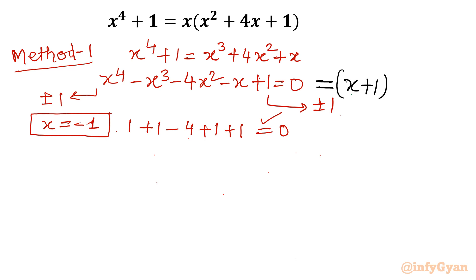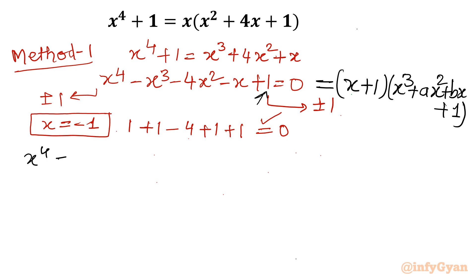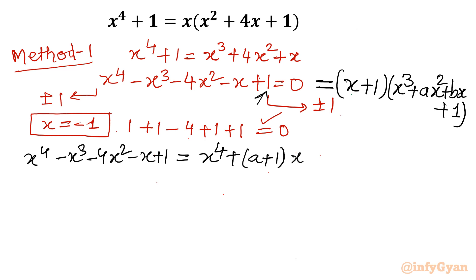So I will express the quartic as (x + 1)(x³ + ax² + bx + 1), using constant coefficient 1 since the original constant term is 1. Now I will expand the right-hand side and compare coefficients. Expanding gives x⁴ + (a+1)x³ + (a+b)x² + (b+1)x + 1.